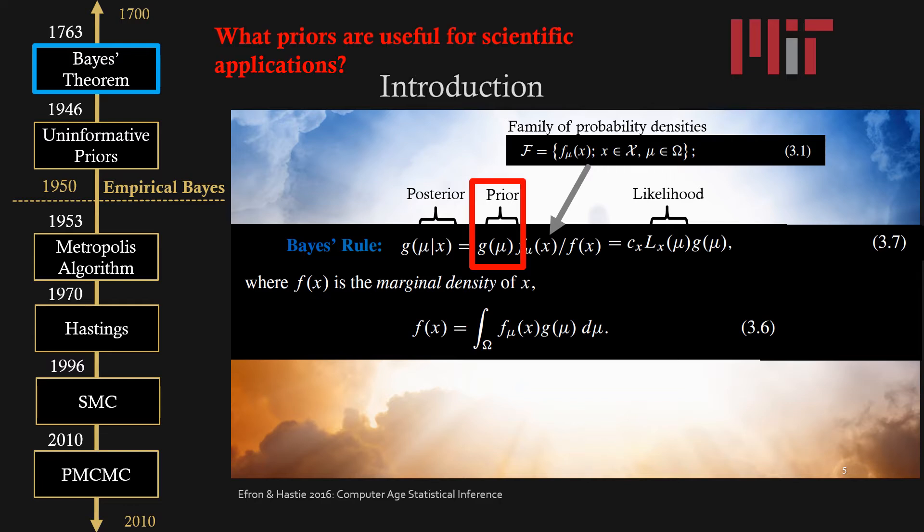When this method was starting to be more widely used, a lot of people asked what prior should you use. These priors influence what posterior result you get, and so ongoing research was happening on determining what priors are the best for scientific applications where we want to be unbiased.